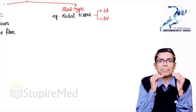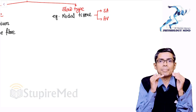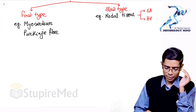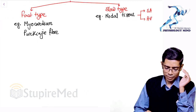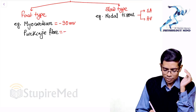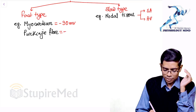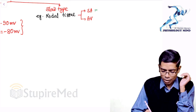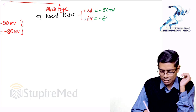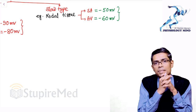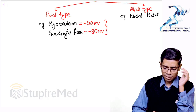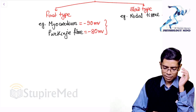Before discussing action potentials, we need to remember the resting membrane potential (RMP) of each tissue. The myocardium RMP is minus 90 millivolts. The Purkinje fiber RMP is almost the same but according to Guyton it is minus 80 millivolts — already an MCQ. The SA node has an RMP of minus 50 millivolts and the AV node is minus 60 millivolts — all important single best answer MCQs.